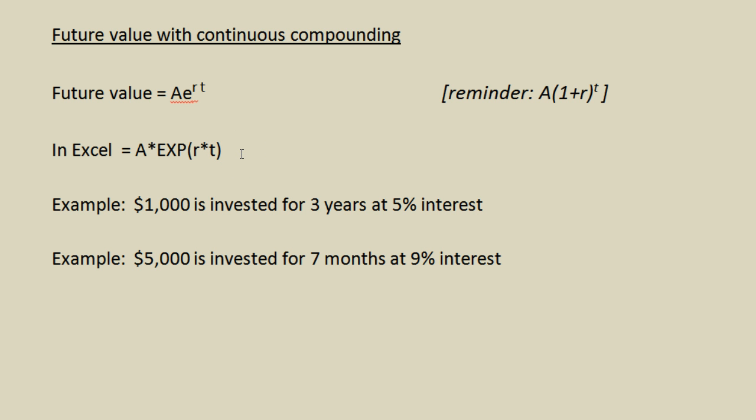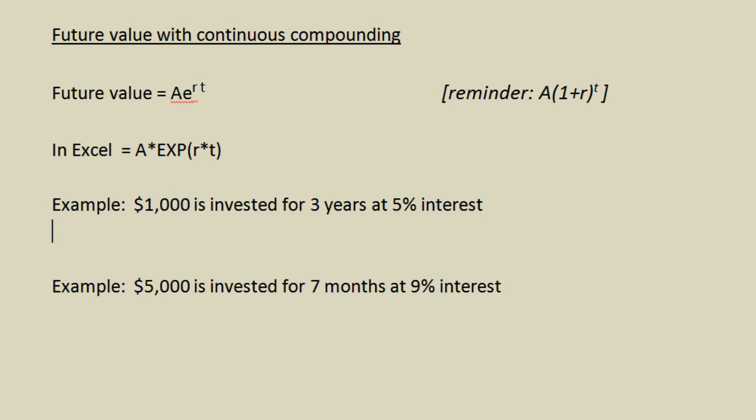This will make a thousand times more sense with an example, and the example involves a thousand dollars. So in the example it says we are going to take one thousand dollars and invest it for three years at five percent interest and the assumption here is compounded continuously.